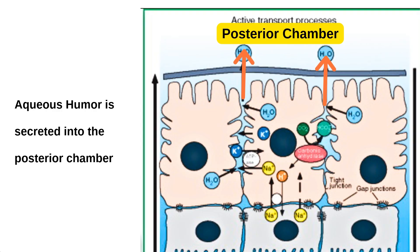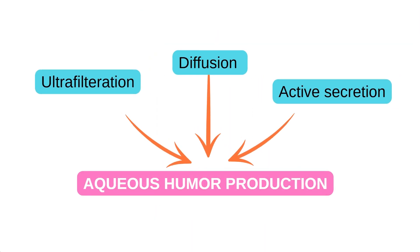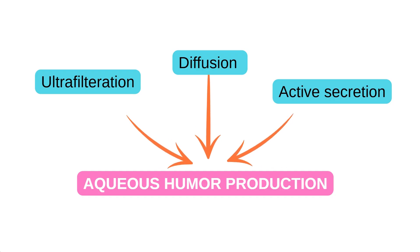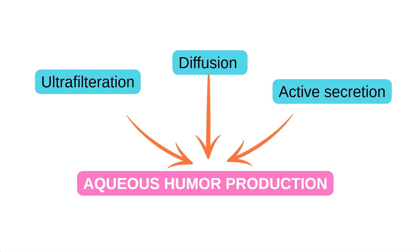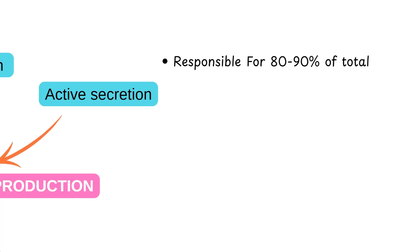To recap, there are three steps in the production of aqueous humor: ultrafiltration, which is a passive process; diffusion, again a passive process; and active secretion, which is an energy-dependent dominant process.